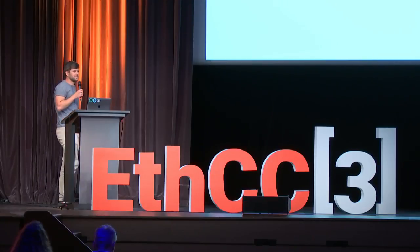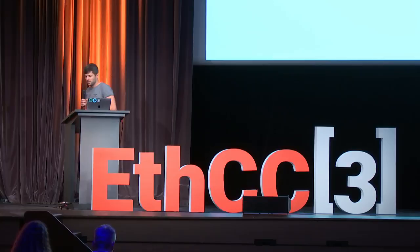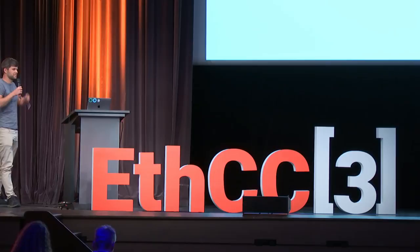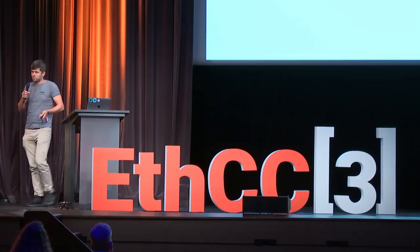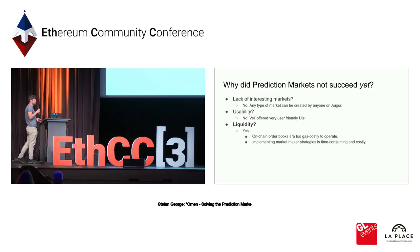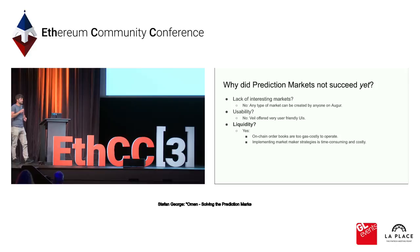You will realize that the spread between the different outcomes — the price between different outcomes — is very big, which essentially means anyone who wants to trade has to pay the spread, which essentially translates to a fee for the user to actually participate. This makes it really costly for users to participate, but also the way current market mechanisms work is very gas-costly for those that want to do professional market making, which is the main reason why professional market makers don't even consider participating on markets like Augur.